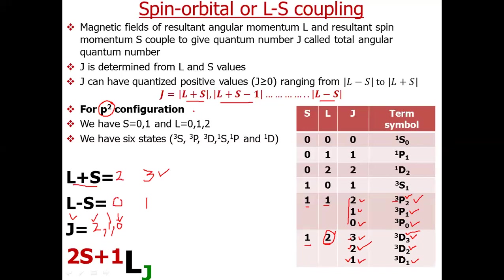The P2 configuration can be of two types. If the two electrons are in different shells — such as 2p1 and 3p1 — all these 10 term symbols are valid. But if the two electrons are in the same shell, such as 2p2, some of these term symbols become invalid due to Pauli exclusion. The former is an excited state and the latter is a ground state; finding ground state term symbols from electronic configuration will be discussed in the next lecture.